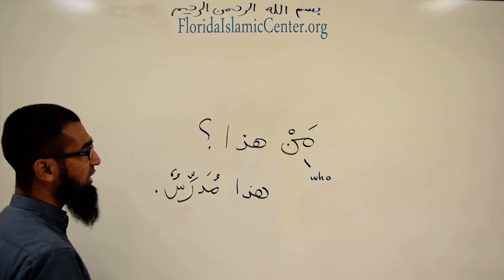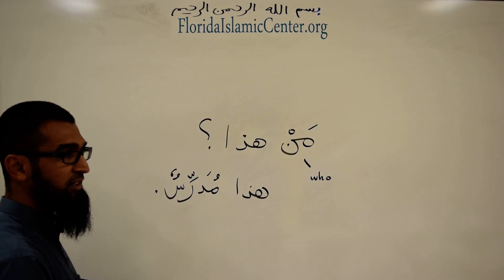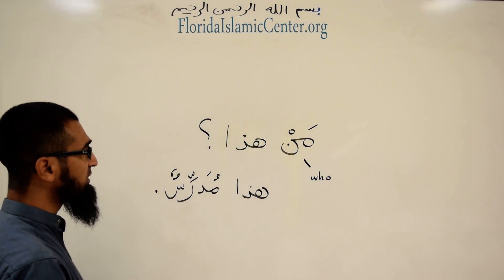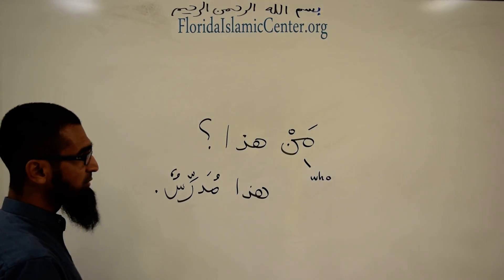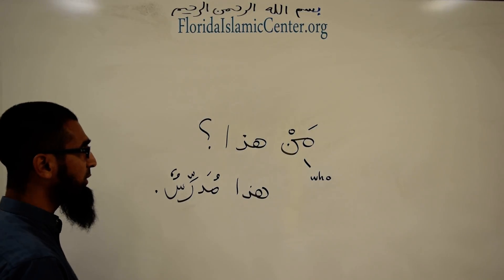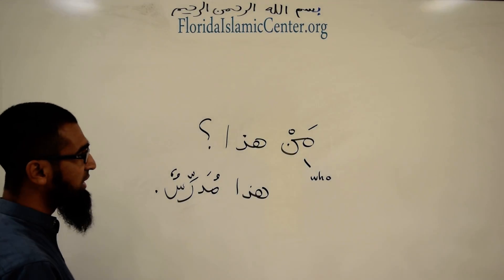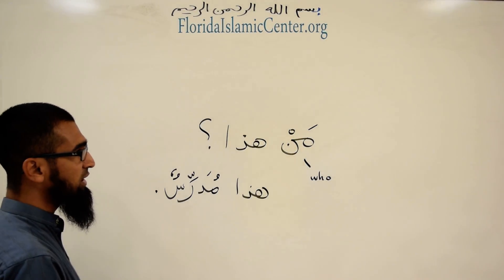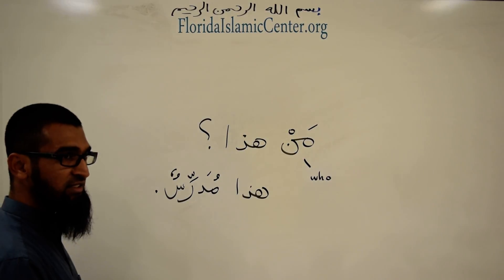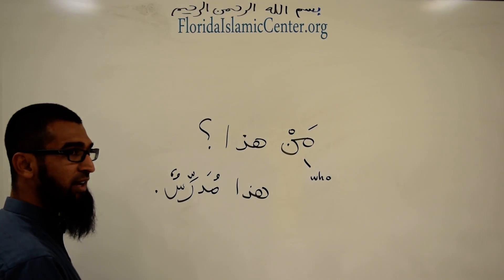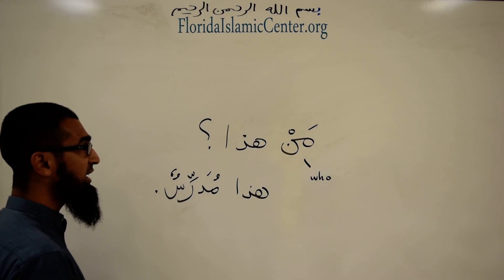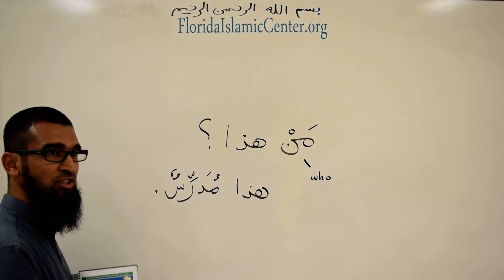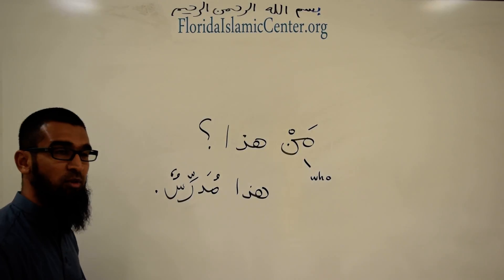So we've covered five things: Hamzatul Istifham, من (who), ما (what), نعم (yes) and لا (no). And we also covered the basic sentence structure of Mubtada and Khabar.